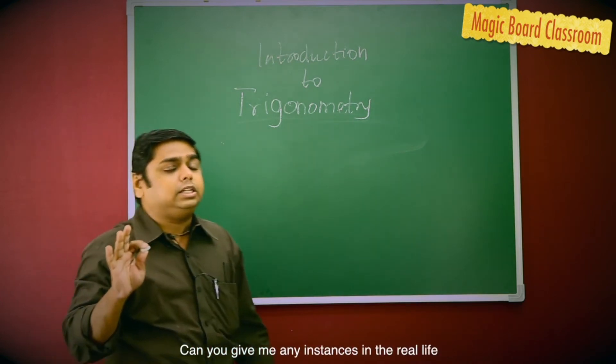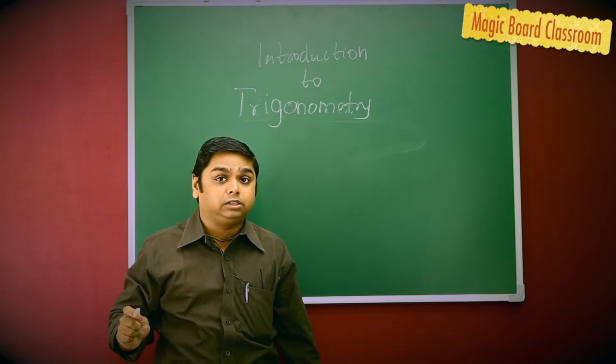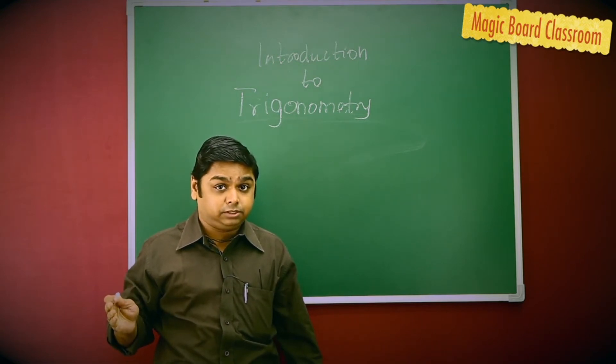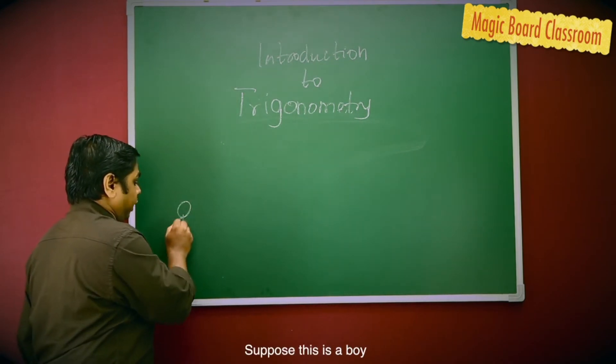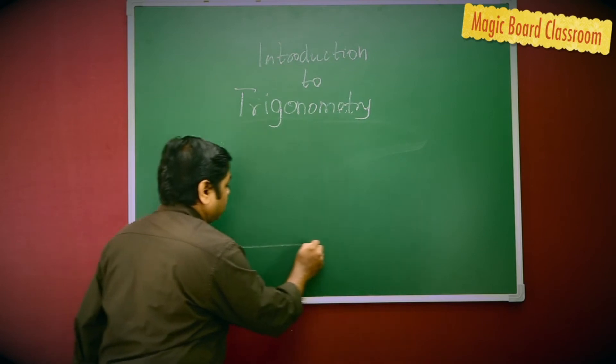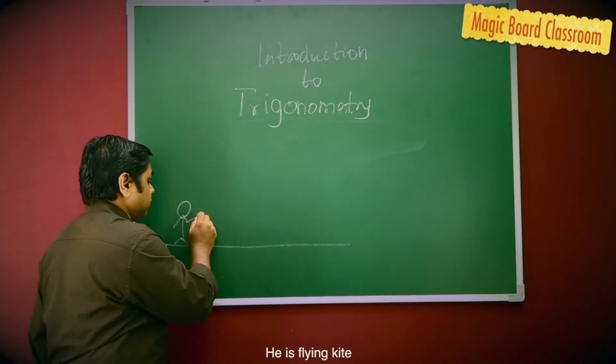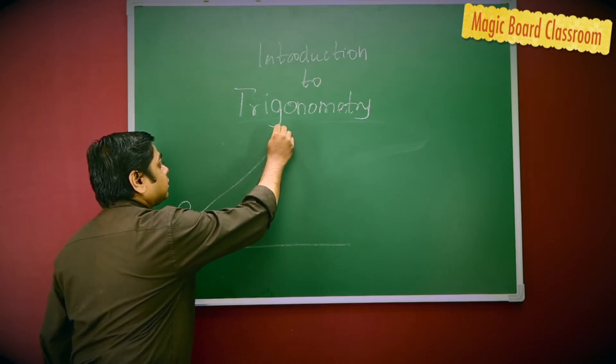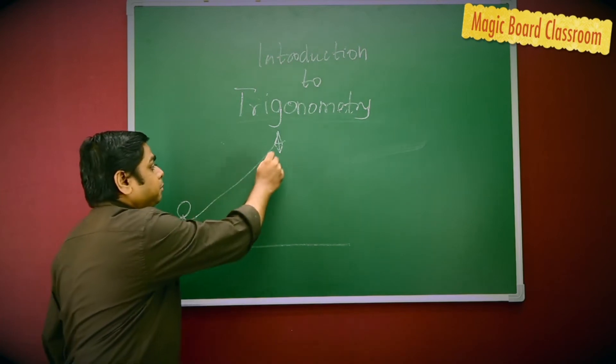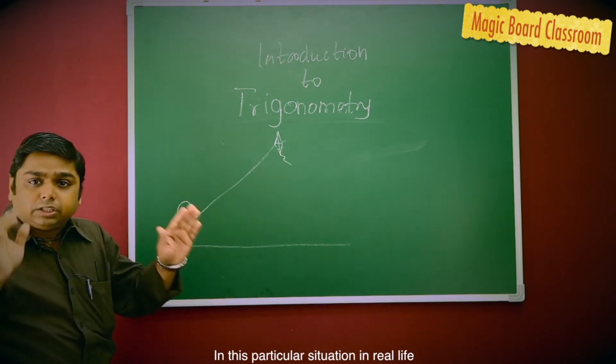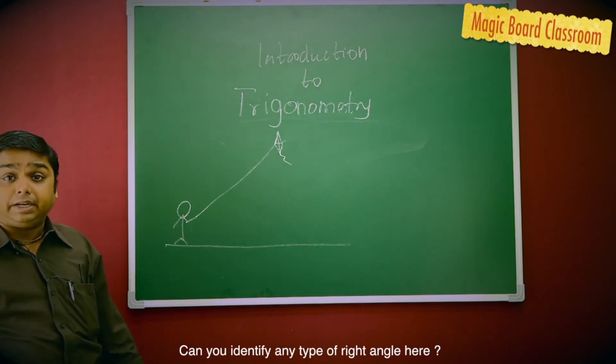Can you give me any instances in real life where you can see a right-angled triangle? Any guesses? Let me give you one situation. Suppose this is a boy on the ground flying a kite. In this particular situation, can you identify any type of right angle here?